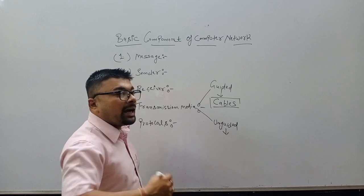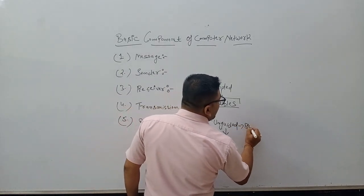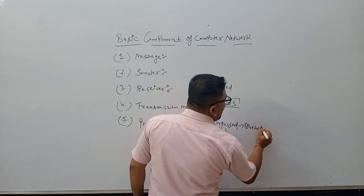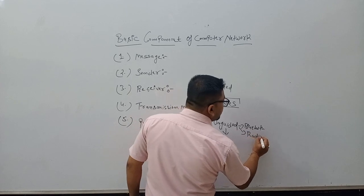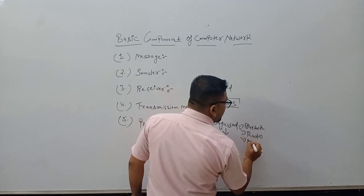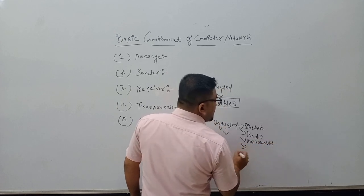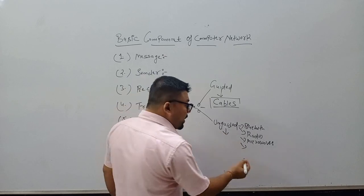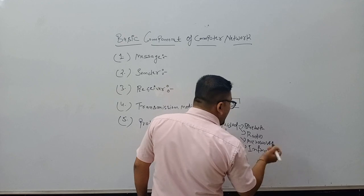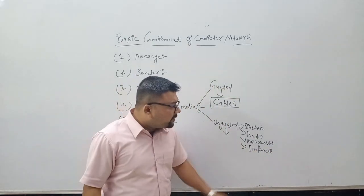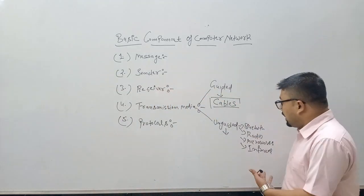In unguided media, we have many things. We have Bluetooth — everybody knows about Bluetooth. We have radio waves. We have microwaves. We have infrared. There are so many channels, and with the help of these channels you can send your message. This is unguided media.